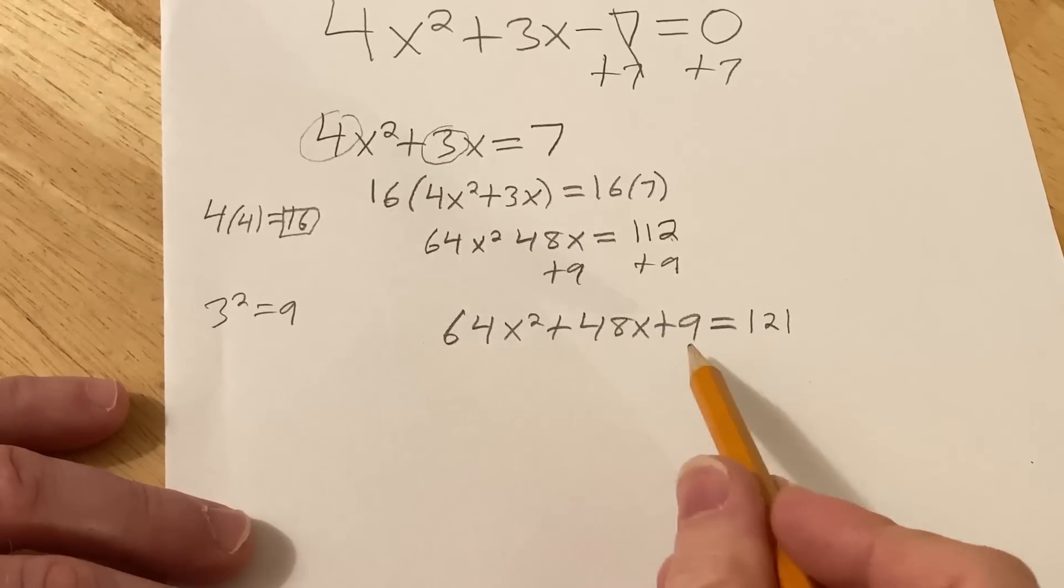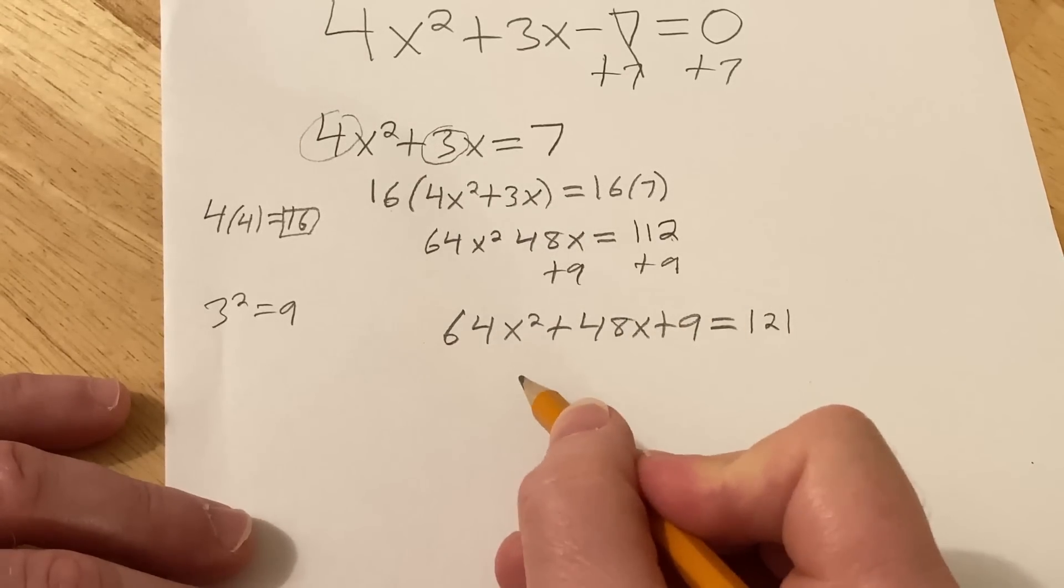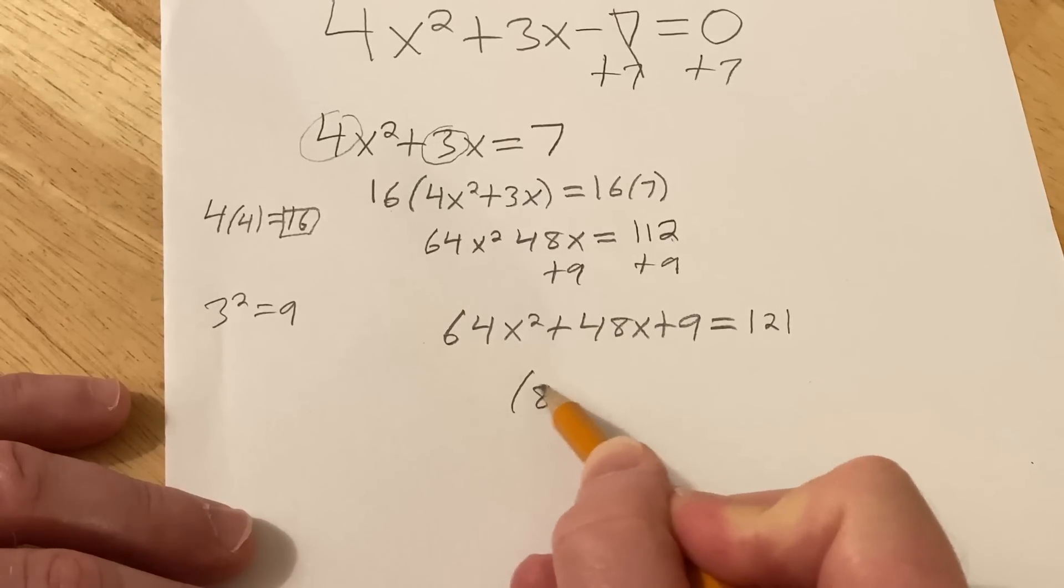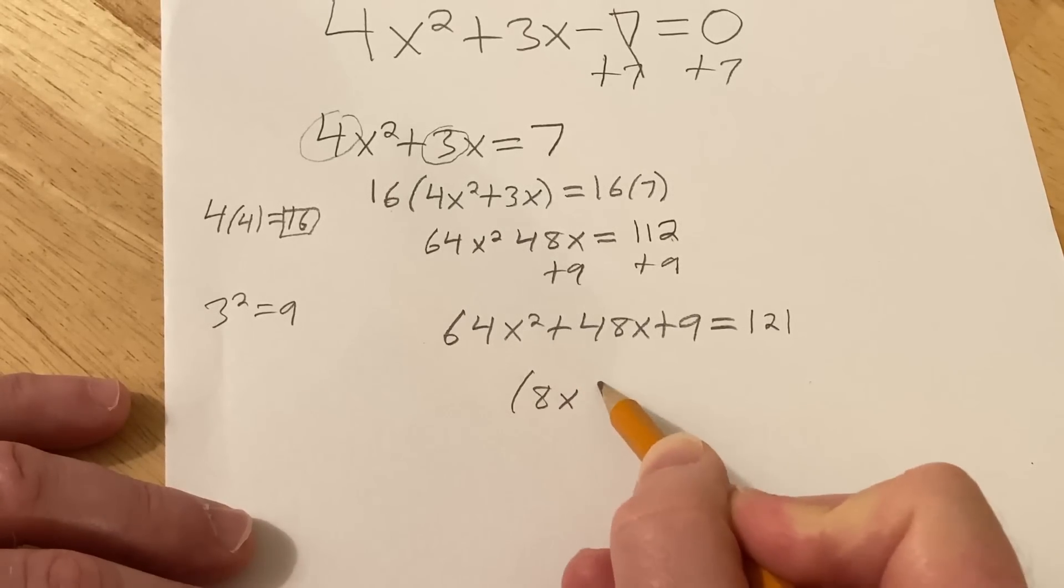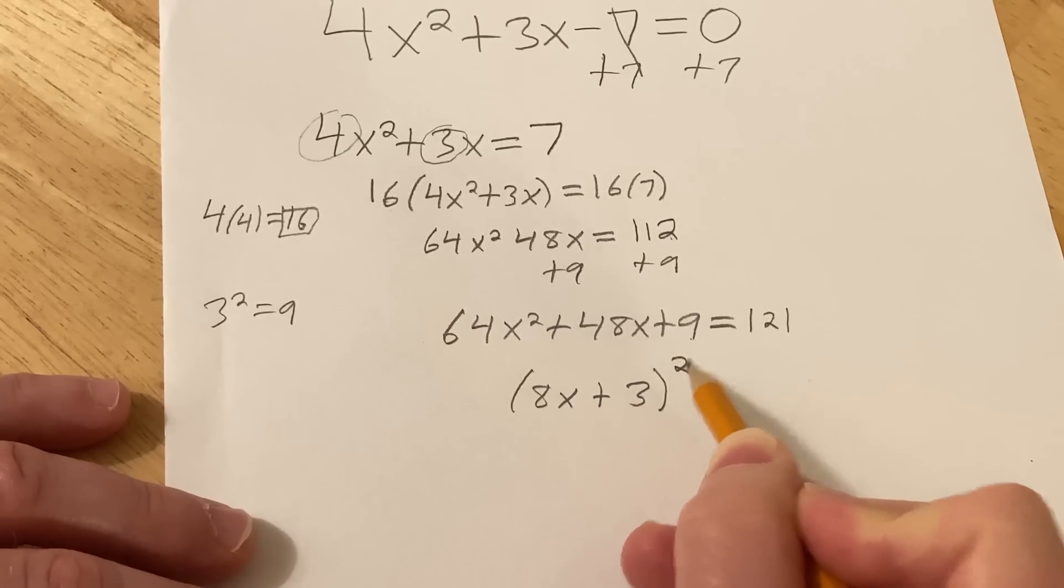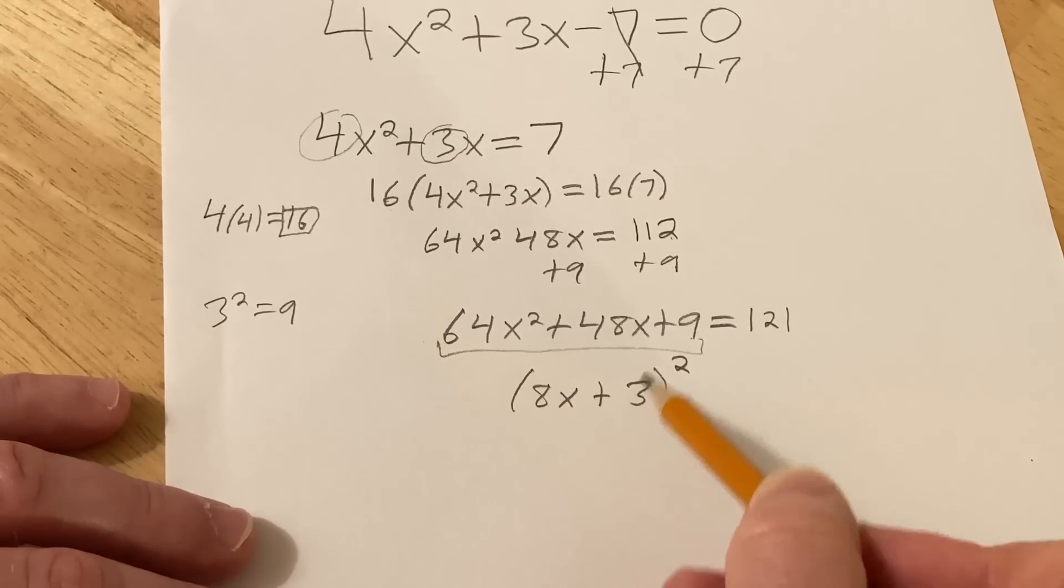Now this is a perfect square trinomial. This means all you do now is basically look at this here and take the square root of that. That's going to be 8x. Keep the sign. Take the square root of that. You get 3. And then you put a 2 here.